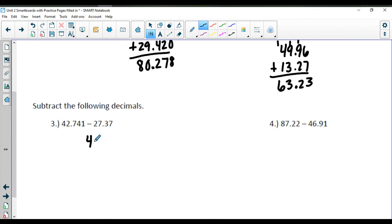Subtracting these following decimals, we're going to do 42.741 minus 27.37. And we'll add a 0 onto the end here. 1 minus 0 is 1. We can't do 4, so we have to borrow. 14 minus 7 is 7. 6 minus 3 is 3. Bring down your decimal point. Can't do 2 minus 7, so we have to borrow. 12 minus 7 is 5. And 3 minus 2 is 1. So we get 15.371.